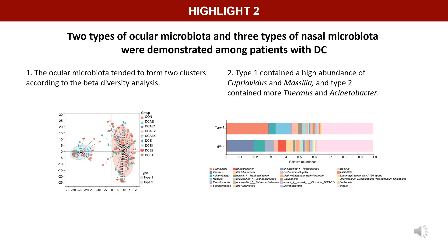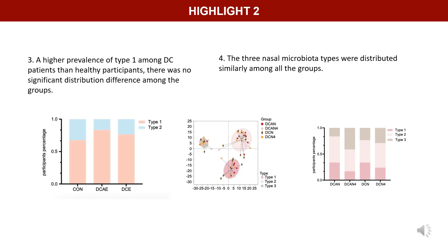Furthermore, we observed two types of ocular microbiota. As you can see, ocular microbiota tended to form two clusters according to the beta diversity analysis. Type 1 and Type 2 ocular microbiota contain different abundance of the top bacterial genera. We found two ocular microbiota types and three nasal microbiota types. The distribution of the types is quite similar among all groups, with a slightly higher prevalence of Type 1 among DC patients than healthy participants.